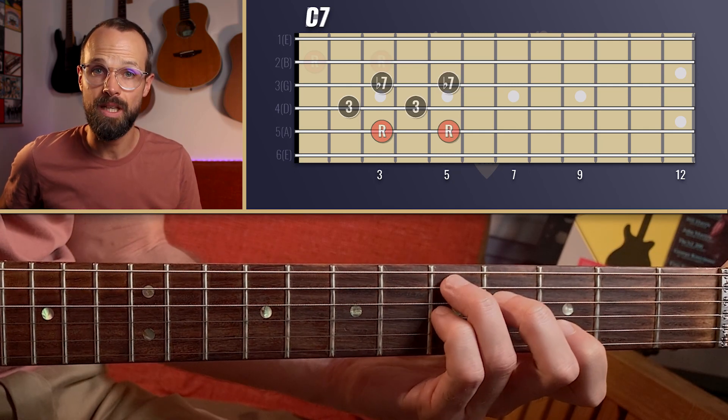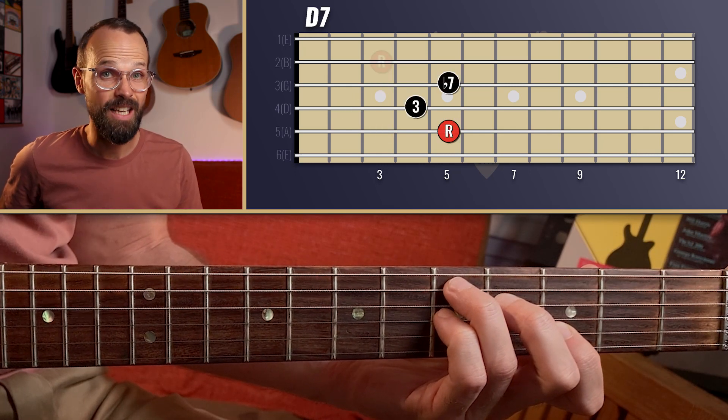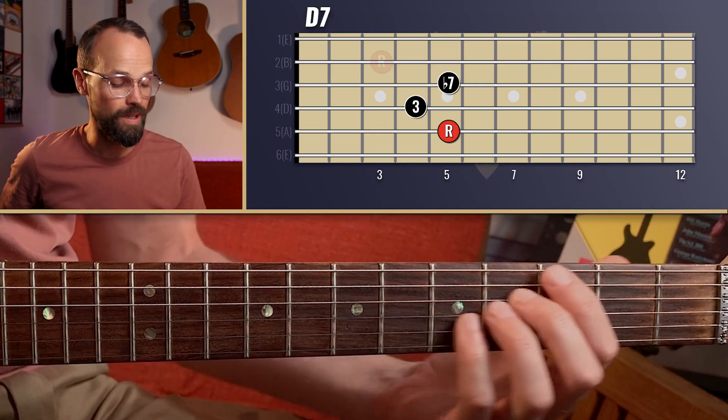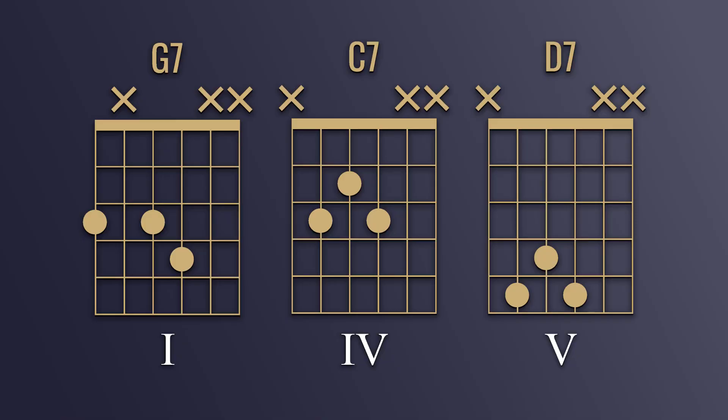I can take that a whole step for a D7. And with that G7, I then have the one, four, five for a blues in the key of G.